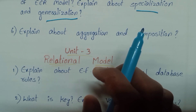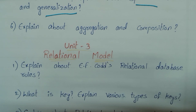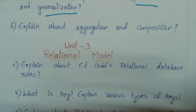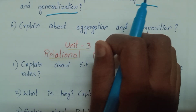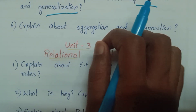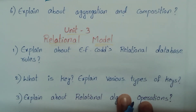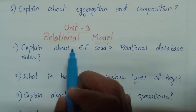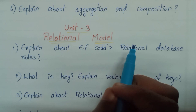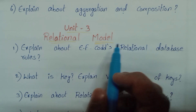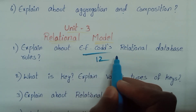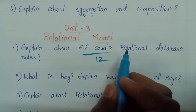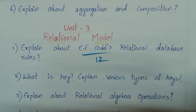Now moving on to Unit 3 — the Relational Model. Explain about E.F. Codd's Relational Database Rules. This is a very very important question covering 12 rules.